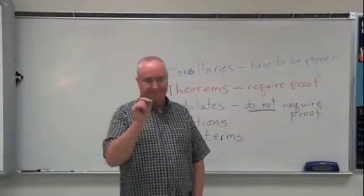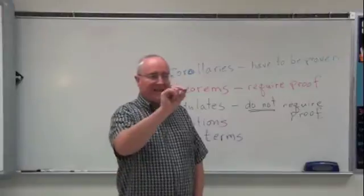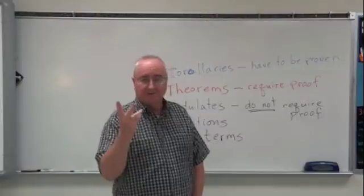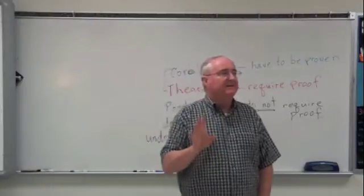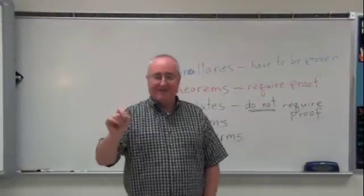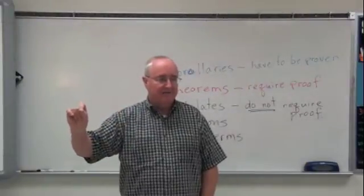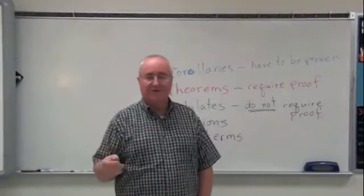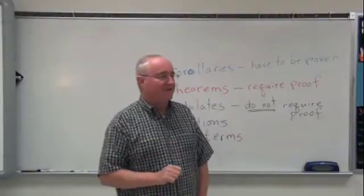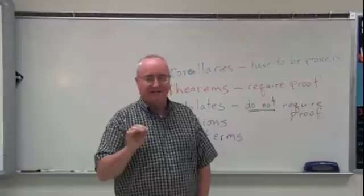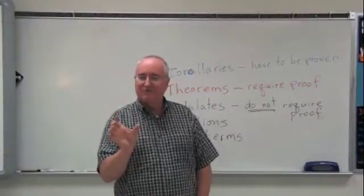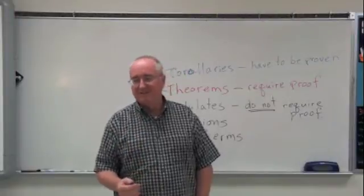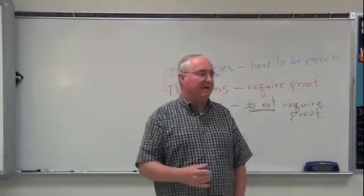The first postulate was: we can draw a line from any point to any other point — the definition of a straight line, two points define a line. The second postulate was: we can extend that line by simply continuing to draw a straight line as far as we want in either direction. The third postulate was: we can define and describe a circle by identifying a center and a distance we call the radius, and that allows us to draw a circle. The fourth one, very simply said, all right angles are equal to each other.